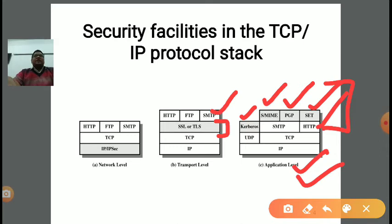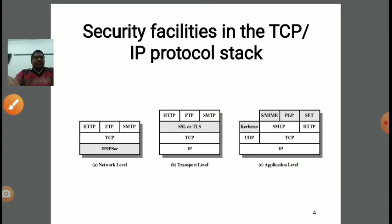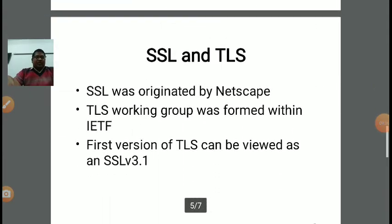The second transport layer protocol is TCP — Transfer Control Protocol — which uses three-way handshaking, making it more time-consuming. The sender sends a request to the receiver, the receiver sends an acknowledgement, and then the sender sends an acknowledgement of the acknowledgement back to the receiver. In this manner, the TCP handshaking process is established. After that, IP — Internet Protocol — is used for the network layer. In this manner, security facilities are provided in the TCP/IP protocol stack.